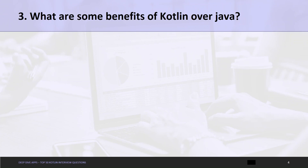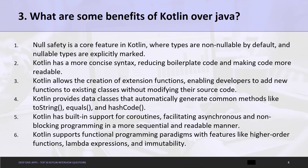Question 3: What are some benefits of Kotlin over Java? First, null safety is a core feature in Kotlin, where types are non-nullable by default and nullable types are explicitly marked. Second, Kotlin has a more concise syntax, reducing boilerplate code and making code more readable. Third, Kotlin allows the creation of extension functions, enabling developers to add new functions to existing classes without modifying their source code.